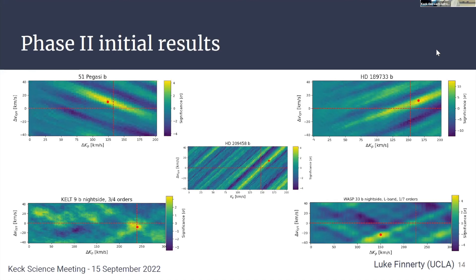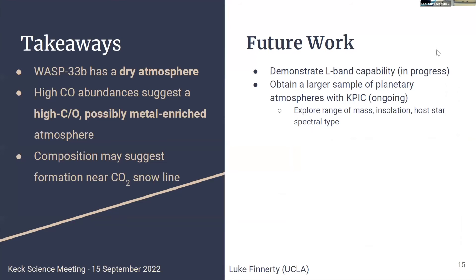This is really complementary to what's happening with JWST because we can look at different targets, different longitudinal ranges, and we're less affected by clouds. So when we have JWST data, it's great — you can get more on the 3D circulation — but it's complementary. I'll leave my summary and future work slide up and take any questions.